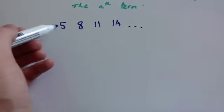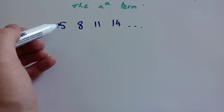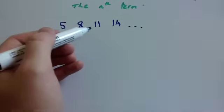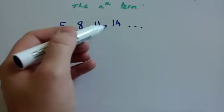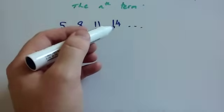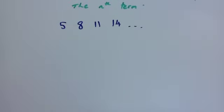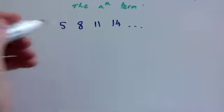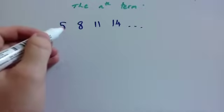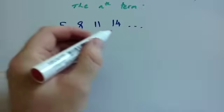So the terms are: the first term is 5, second term is 8, third term is 11, fourth term is 14, and so on. We're going to find the nth term for this sequence. The nth term is the rule for the sequence. To find the nth term, first of all, you need to consider what it's getting bigger by each time.